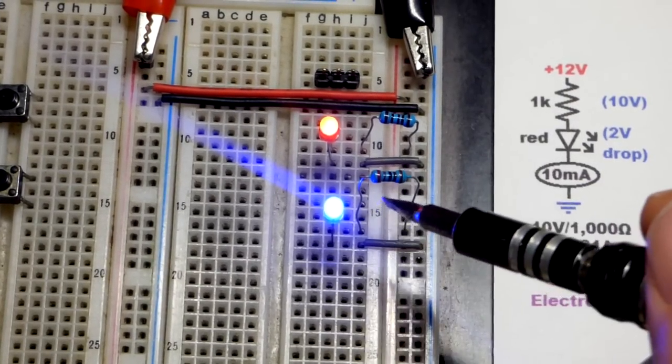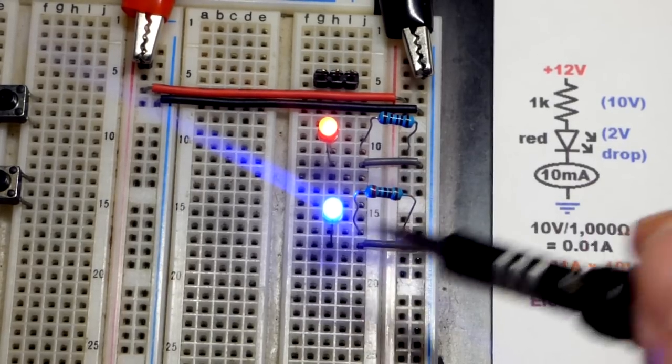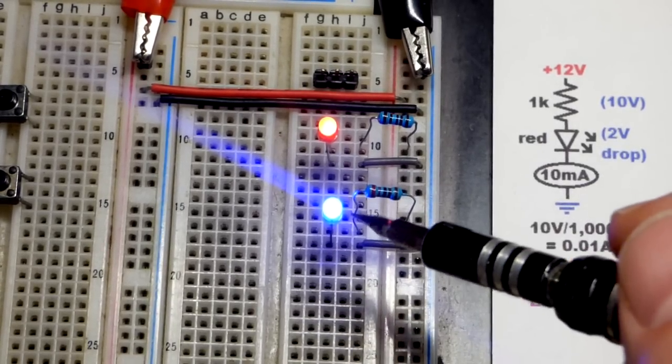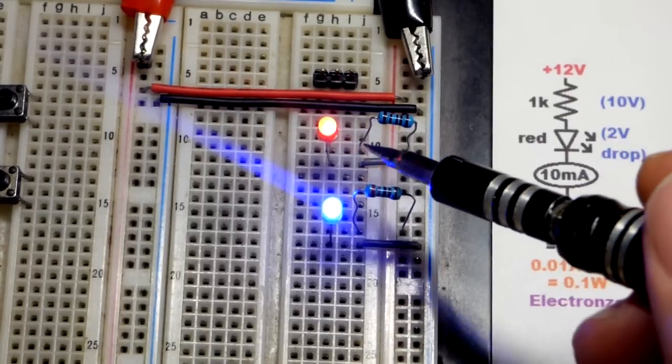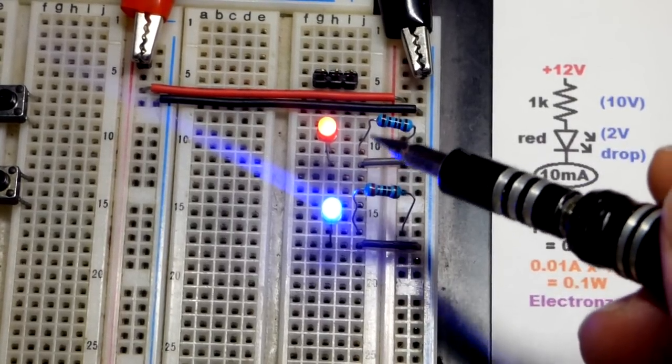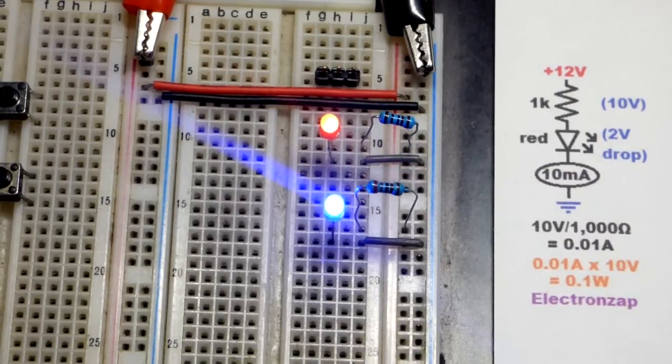We got a little bit, or a fair amount, less than half the current flowing through the blue LED, and it's still brighter than the red LED. We might want to use some ways to get more current through here, topics for later videos, but this is okay as well.